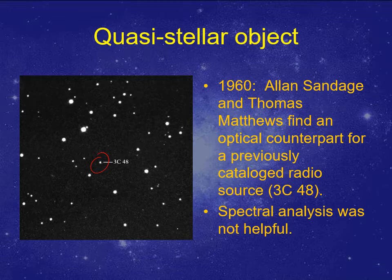When I was a kid, science fiction author and science author Isaac Asimov wrote a book about astronomy with one chapter on radio stars. And that's what they were calling these things at the time — a radio star.